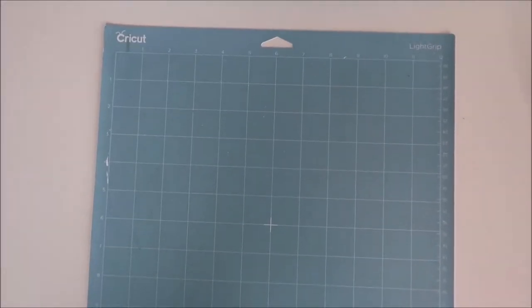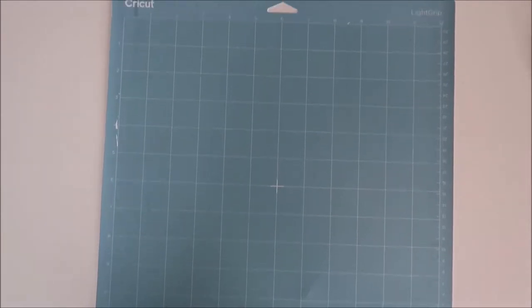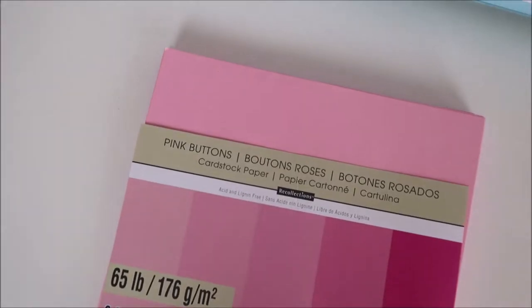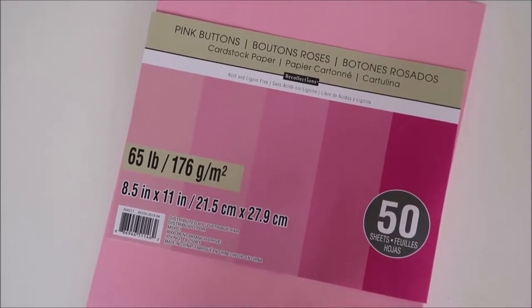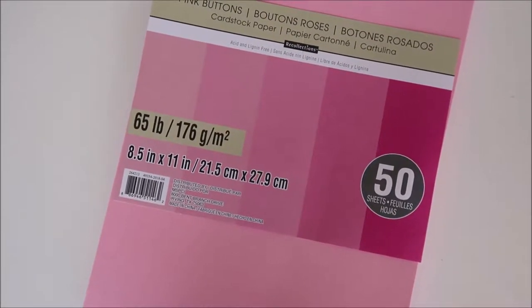For the materials, I use the blue light grip mat which I highly recommend when using paper material. It makes it so much easier to take the paper off of the mat and prevent it from ripping. I'm using a 50 sheet pack of cardstock that I bought from Michaels. It's 65 pounds and it's 8 and a half by 11 for the size and it came in five different shades of pink.